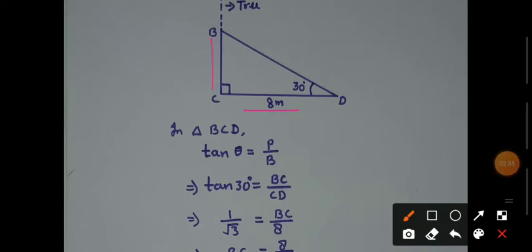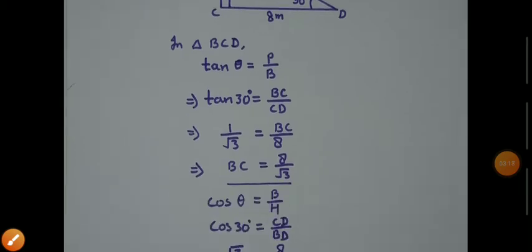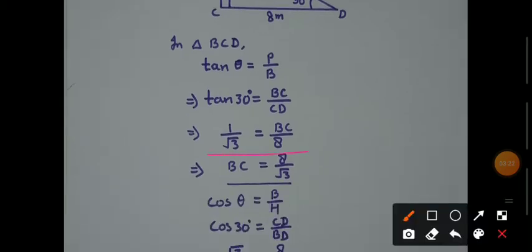The angle is 30 degrees. This is perpendicular and this is the base, so perpendicular upon base. The trigonometric ratio is tan theta. Tan theta equals P upon B. Theta value is 30 degrees, perpendicular is BC, and base is CD. Tan 30 value is 1 by root 3 equals BC over 8. When we cross multiply, BC equals 8 by root 3.